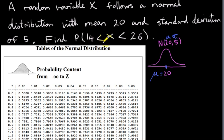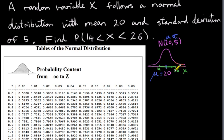We're interested in the probability that X takes on values between 14 and 26. So 14 is to the left of 20 — it's less than 20 — and 26 is over here. X is all along the horizontal line, which represents all your X values. The probability that X has a value between 14 and 26 is given by the area under the distribution.